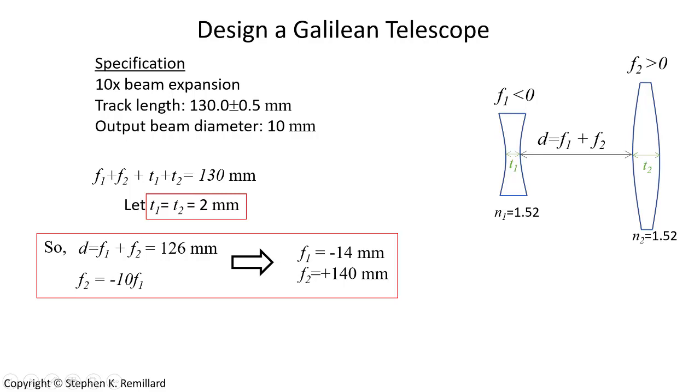That gives two equations and two unknowns, which can be quickly solved for F1 and F2. If the system is designed such that a diverging lens has a focal length of minus 14 millimeters and the converging lens 140 millimeters, the beam should come out with a magnification of 10, and well collimated.